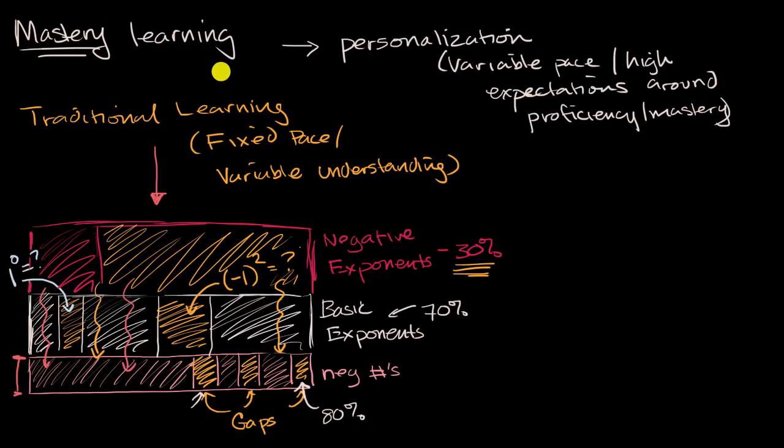So in a mastery learning system, maybe the student would be ready for the negative numbers. And maybe after a few weeks, they take some type of an assessment. They get as much practice and feedback as possible. And they perform similarly to that first example. Maybe they get that 80% there.